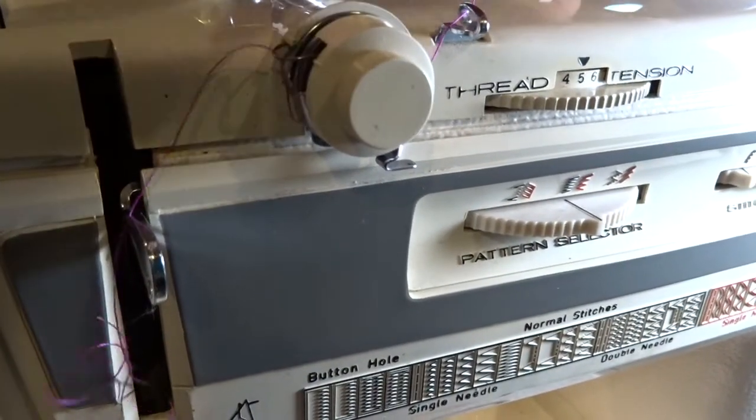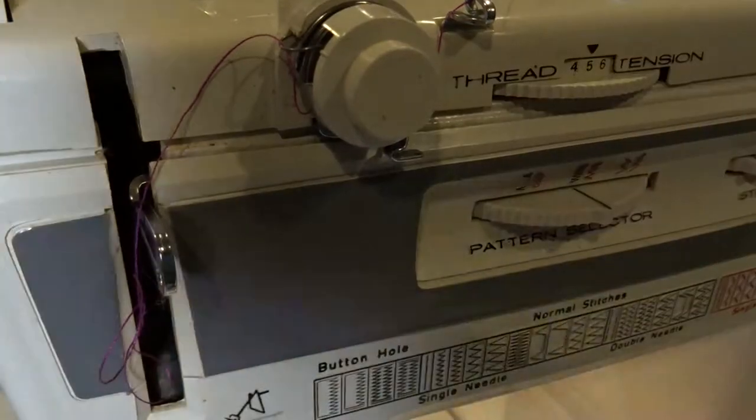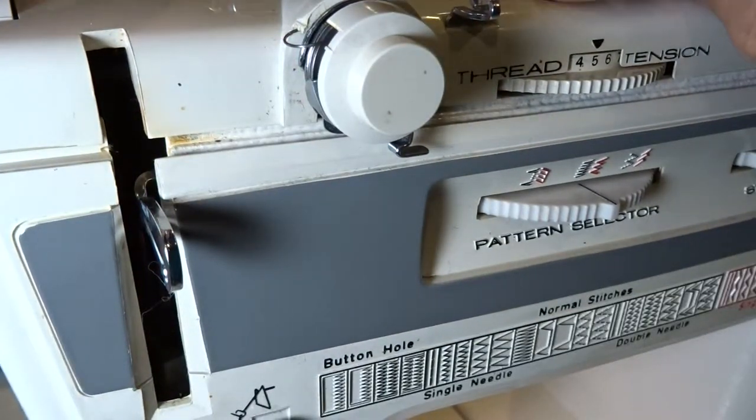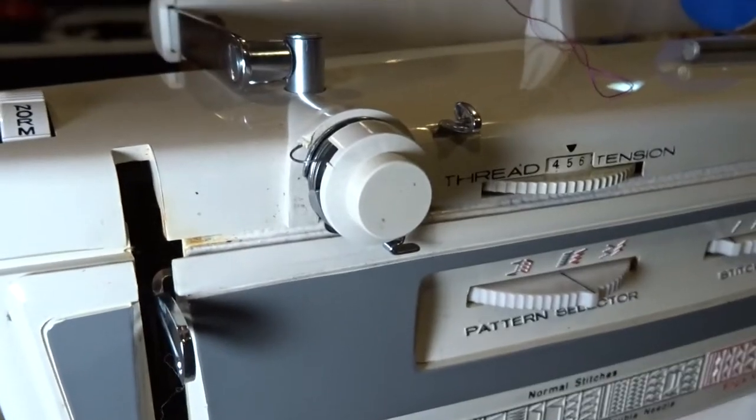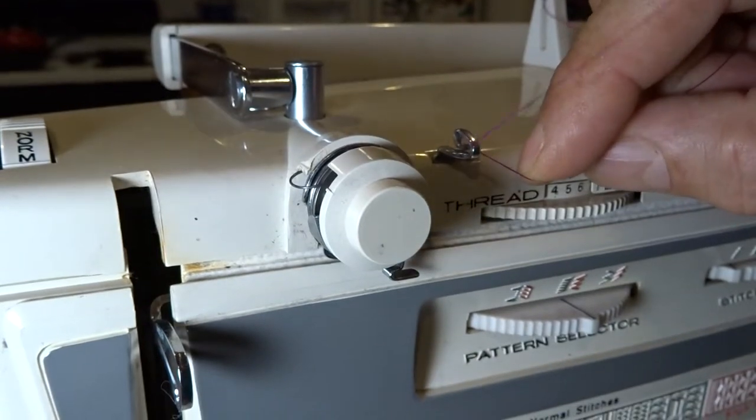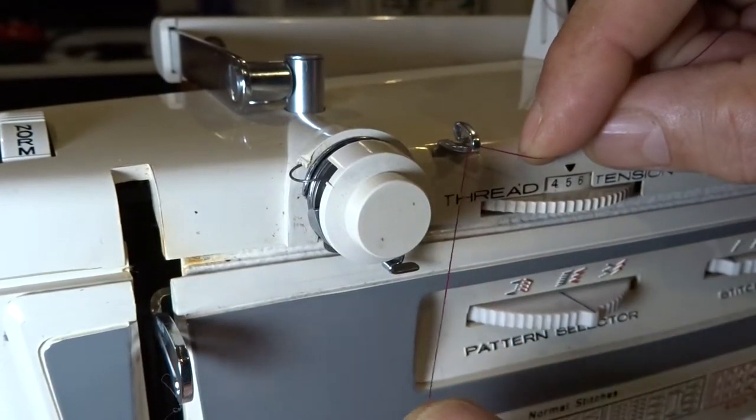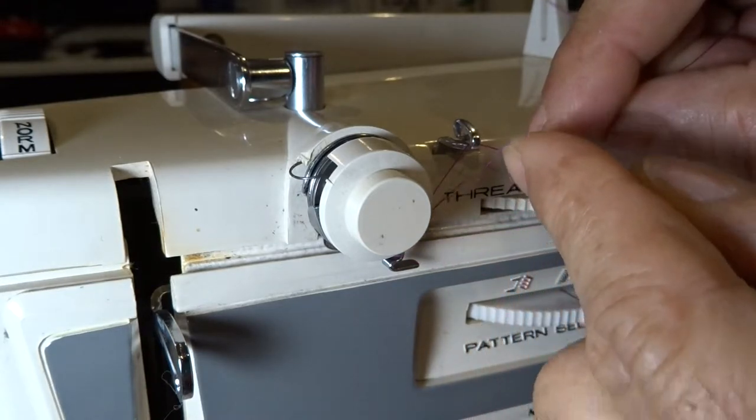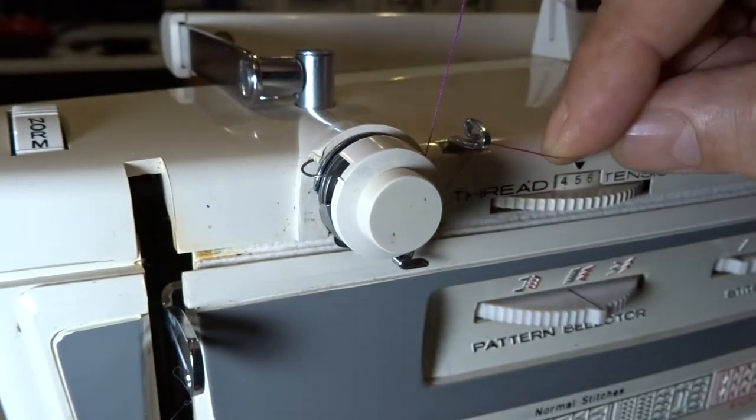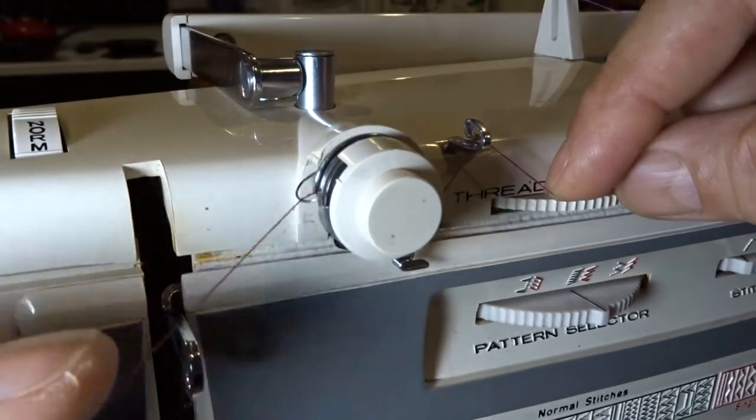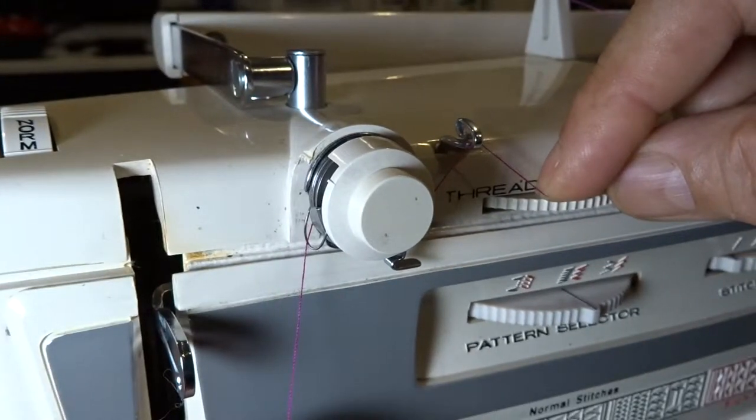Let me put the light on the other side. So you put it right here, run the thread underneath and up and over the thread tensioner, and take it all the way down until you hear a snap.